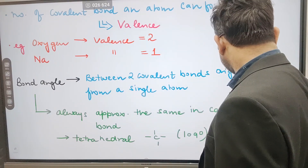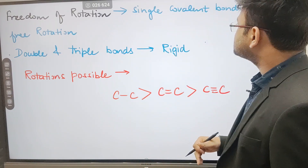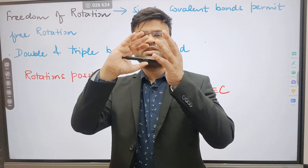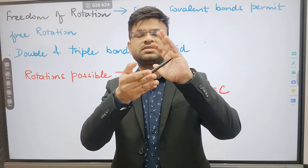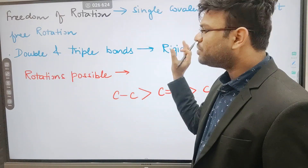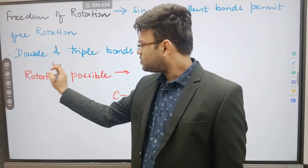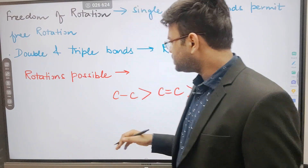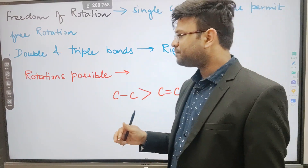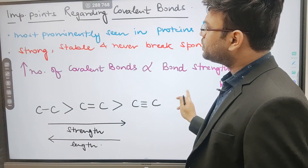Freedom of rotation means that a single covalent bond would permit free rotation. If two atoms are connected by only one bond, the freedom of rotation is very high — it can rotate in any orientation. Double and triple bonds create rigidity, meaning much less movement is possible. For C–C single bond, rotations possible are highest; for C=C double bond, lesser rotations; and for C≡C triple bond, the least rotations are possible.